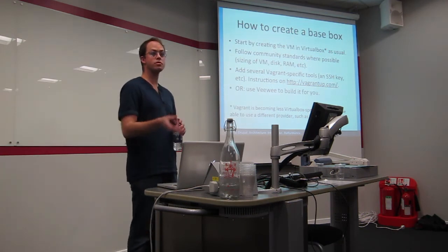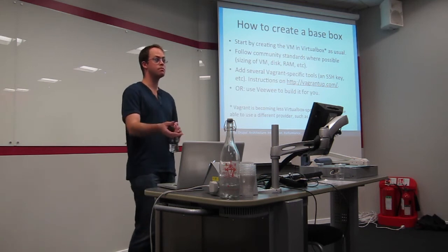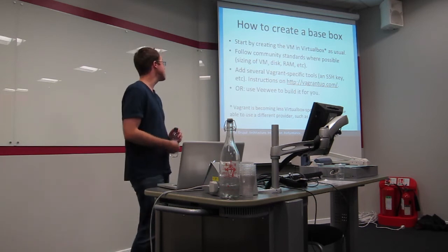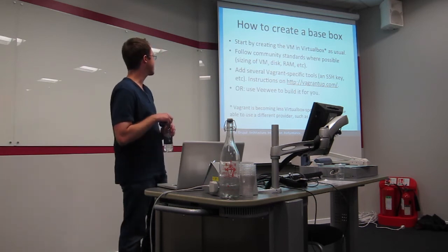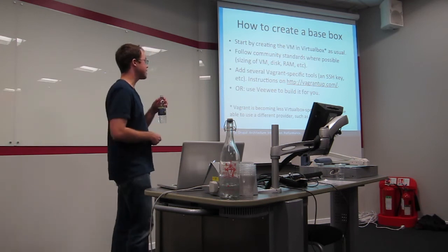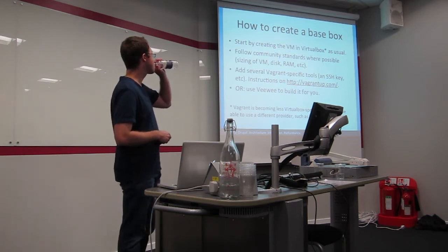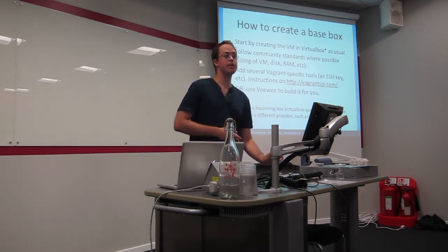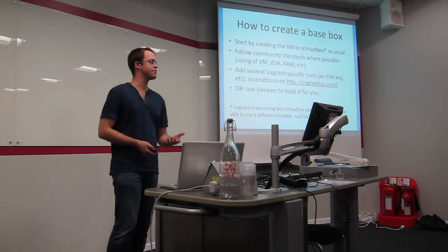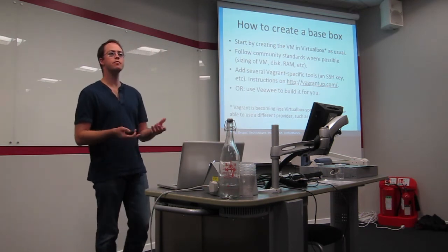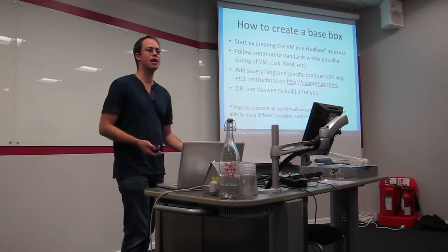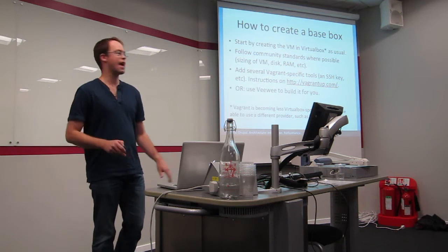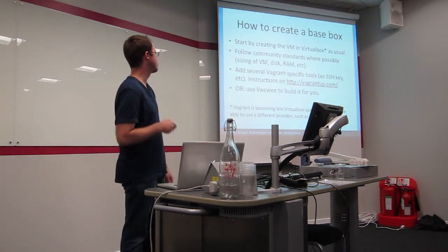And you do need to do several Vagrant specific things. So once you've installed a plain old Ubuntu box. So you can install it from the CD-ROM or from an ISO. Then you need to add a Vagrant user. You need to add some SSH keys. And that website will tell you exactly what you need to do. Veewee is a very recent tool that automates all of the building of base boxes too. So actually if you search around for instructions on building base box, you will find a load of websites which tell you how to do it manually, step by step. Install Ubuntu, add this, add that. Don't do that. Just get Veewee and Veewee will build it all automatically.